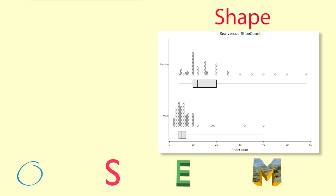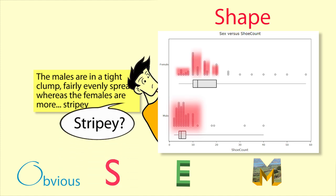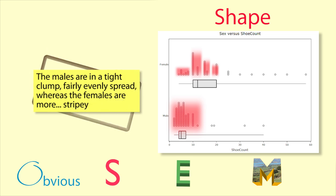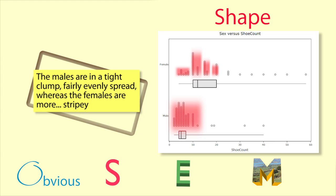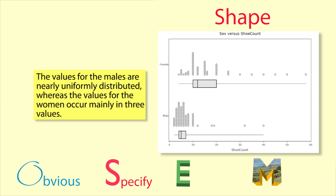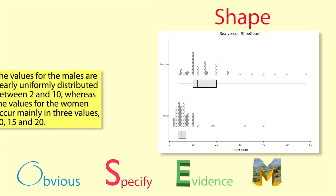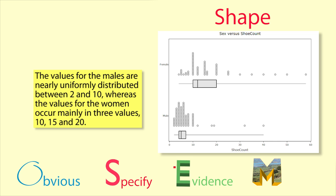Next we move on to shape — do the shapes of the distributions differ and how? Obvious — the males are in a tight clump, fairly evenly spread, whereas the females are more stripey. Our obvious statement does not have to be well framed; it's good to get the idea down first before developing it further. Specify — the values for the males are nearly uniformly distributed, whereas the values for the women occur mainly in three values. Evidence — the values for the males are nearly uniformly distributed between 2 and 10, whereas the values for the women occur mainly in three values: 10, 15, and 20.